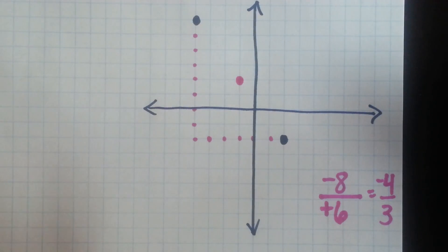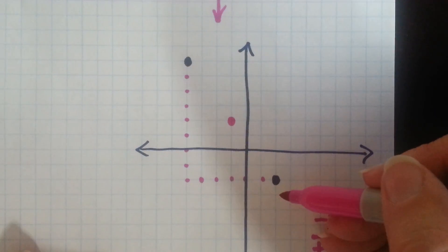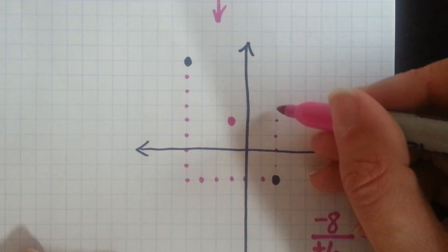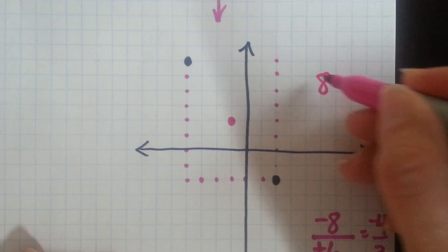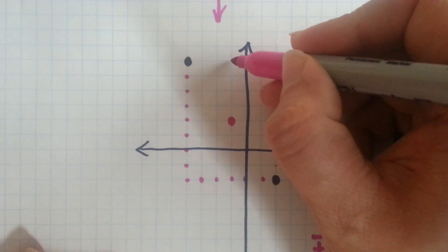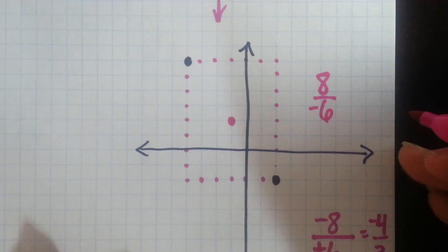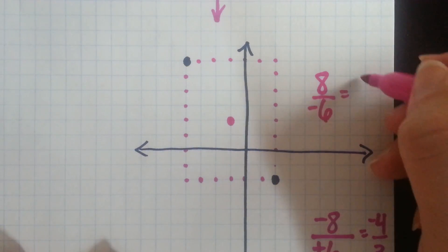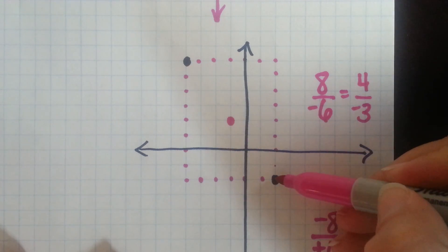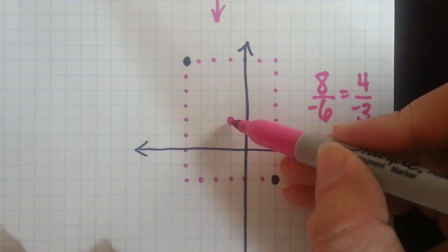Now what if I wanted to count up instead? If I counted up from the bottom point, I would have counted up eight, giving me a positive eight. Then I would have gone back to the left six. Since it went left, it was a negative six. Of course that would reduce to four over negative three. So if I went up four and to the left three, I would be back on my line.